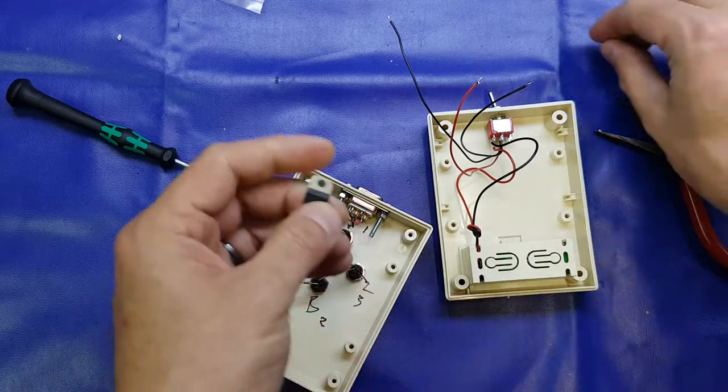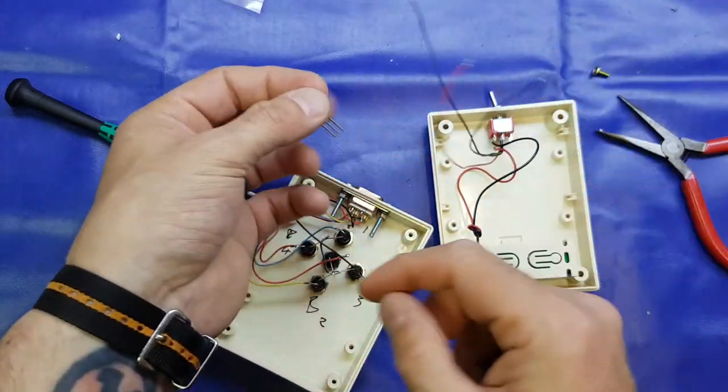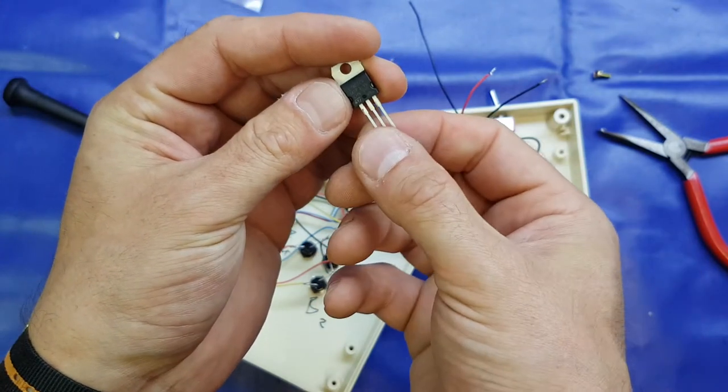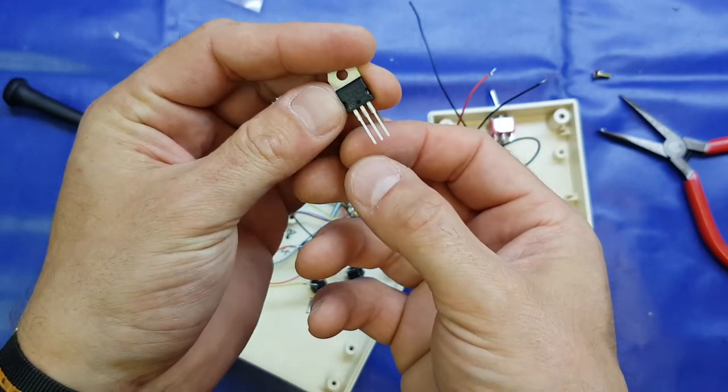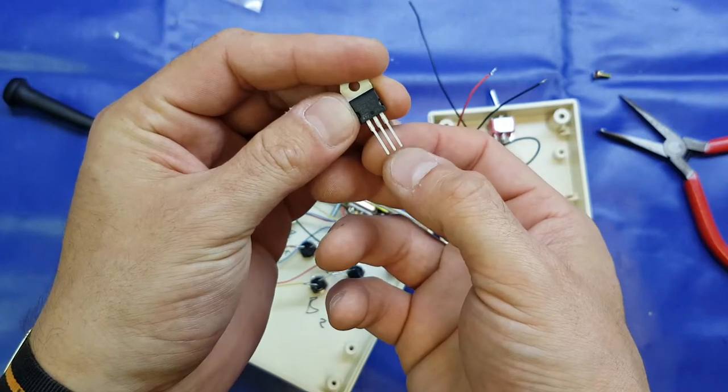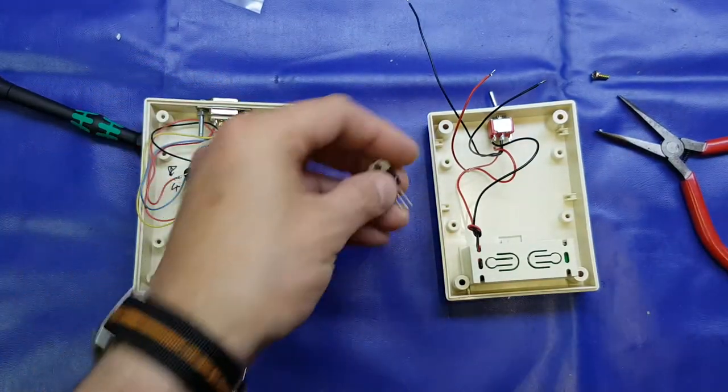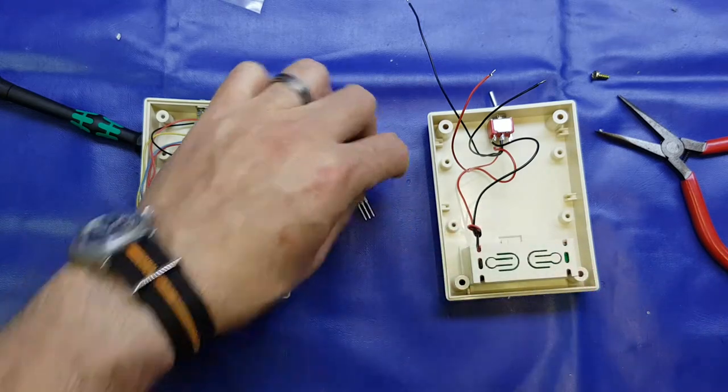In fact, we'll solder on first. So our power supply goes into pin 1 and 2. Pin 1 is the positive side and pin 2 is the negative. I'll just tin those up.